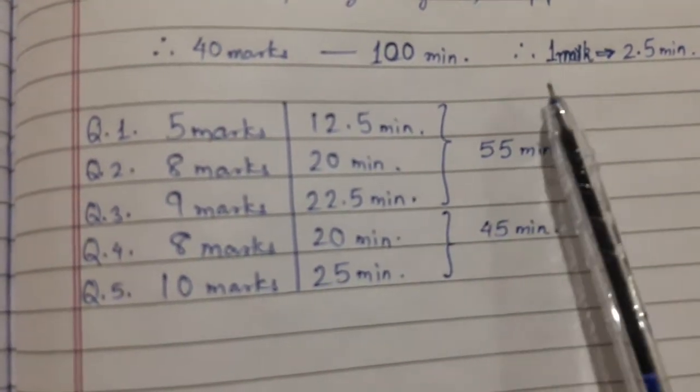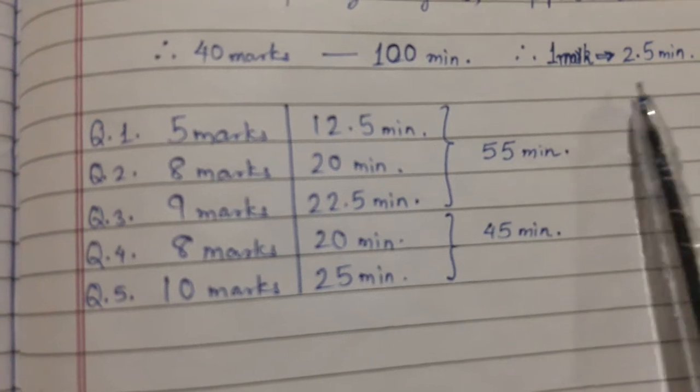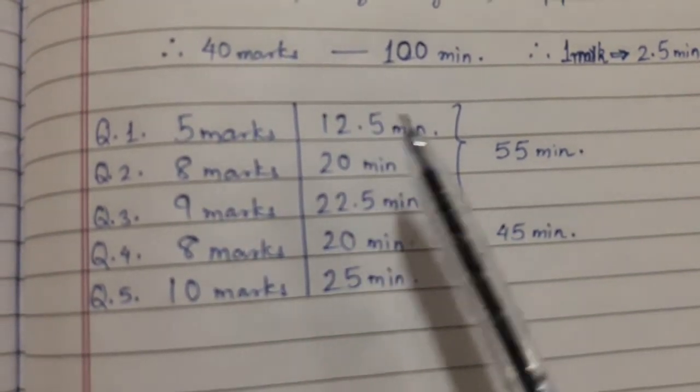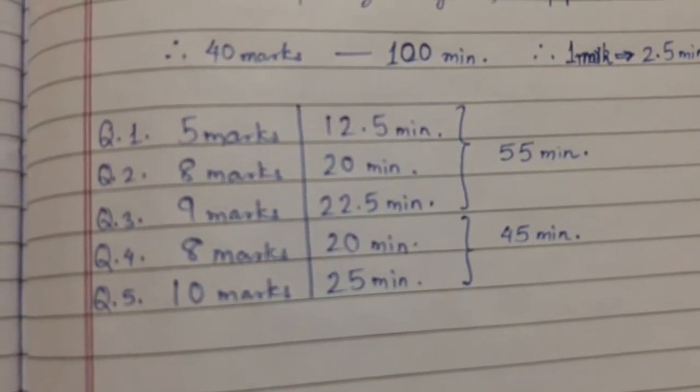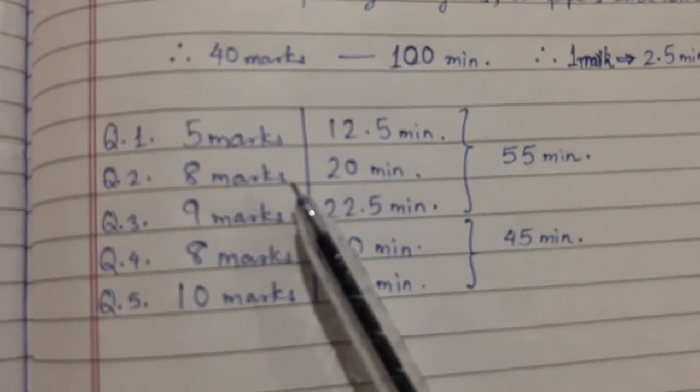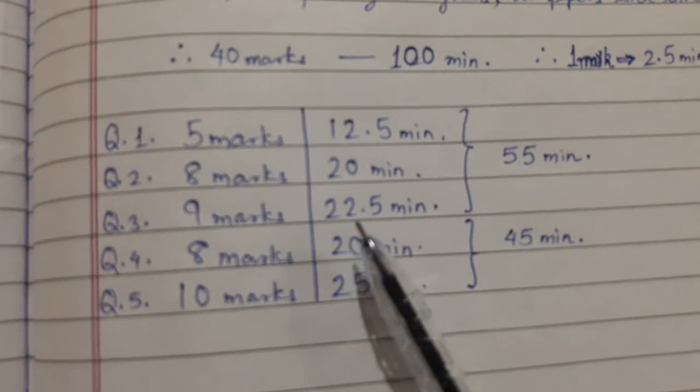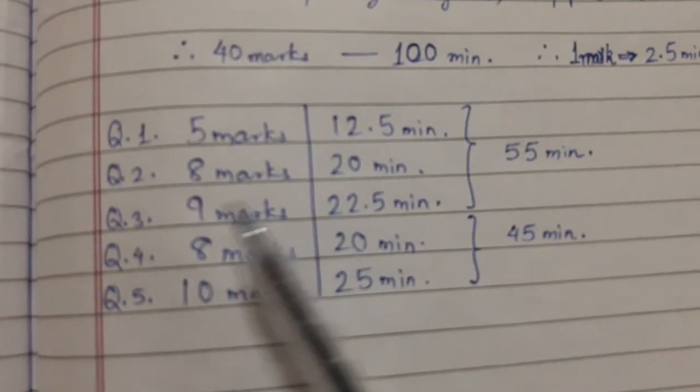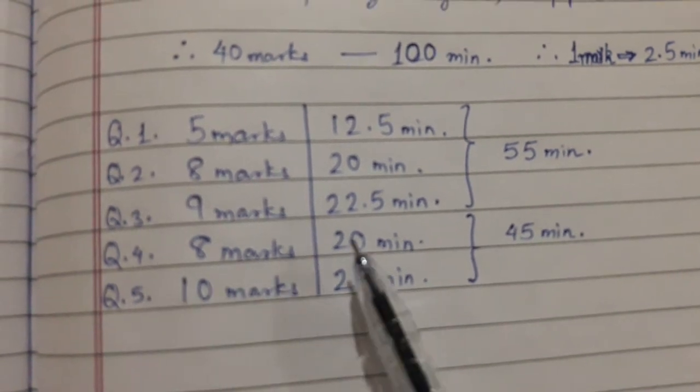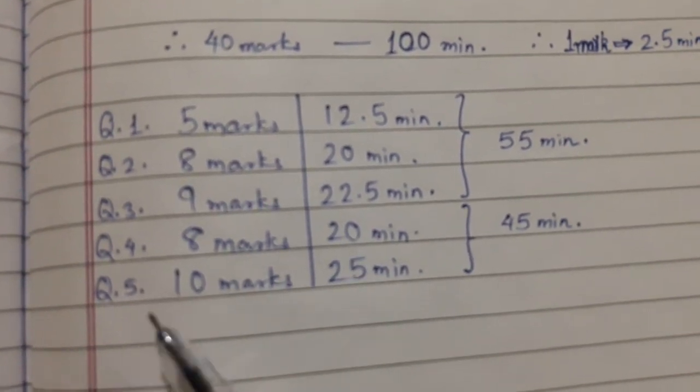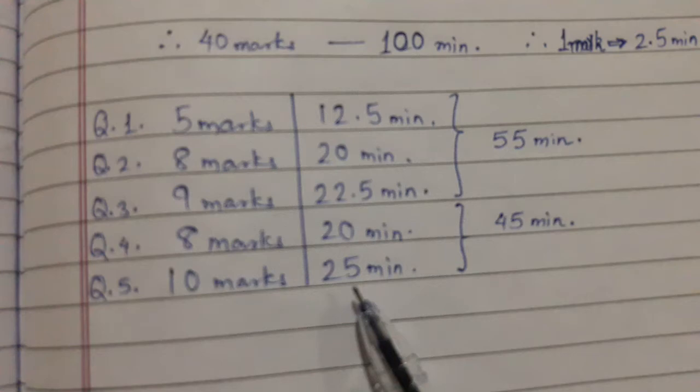So with the concept one mark is equal to 2.5 minutes, the first question should get completed in the first 12.5 minutes. Then in the next 20 minutes, question number two should get completed. And question number three should take 22.5 minutes. Question number four should take around 20 minutes. And question number five should take around 25 minutes.